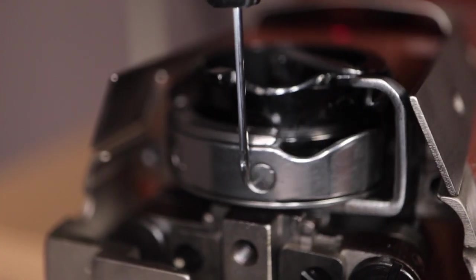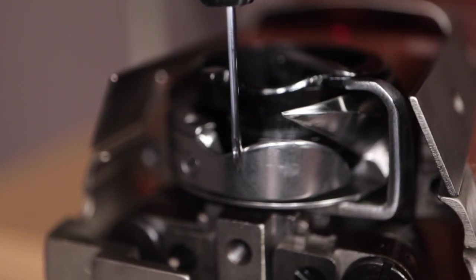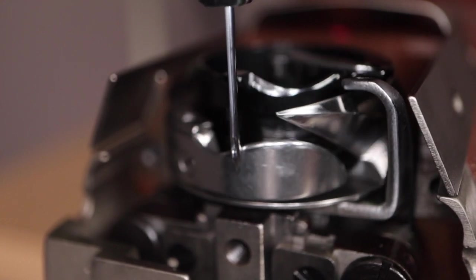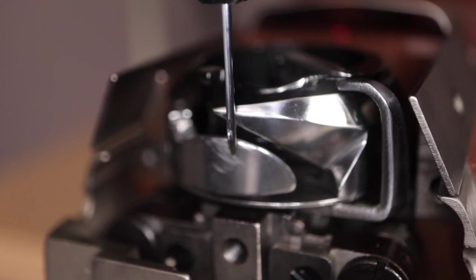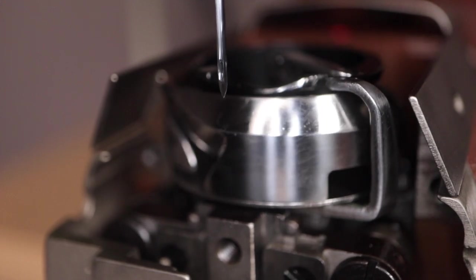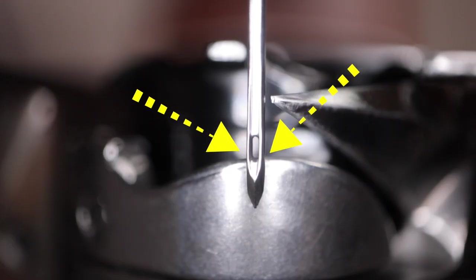Now once you start turning the hand wheel you should see a few key things. As the needle goes up, the bottom of the eye should be parallel with the needle guard, and the hook will be exactly one eighth of an inch above the needle eye and in proper position going through the needle scarf.